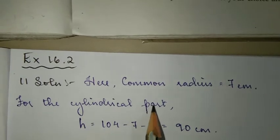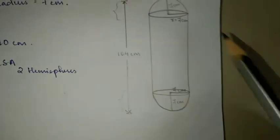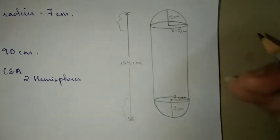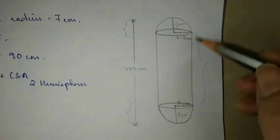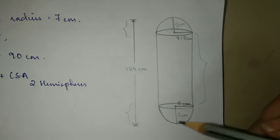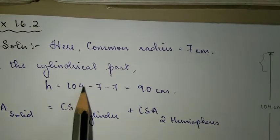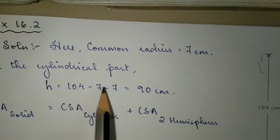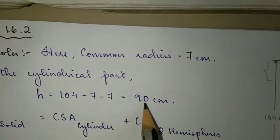For the cylindrical part, we need to find the height. The height is 104 minus 7 minus 7, which equals 90 centimeters.